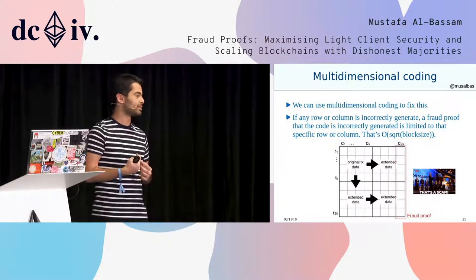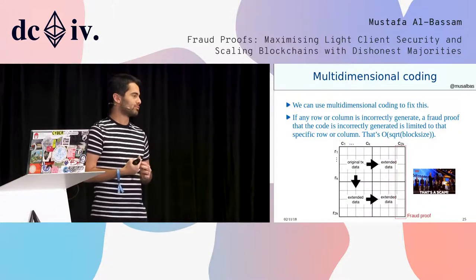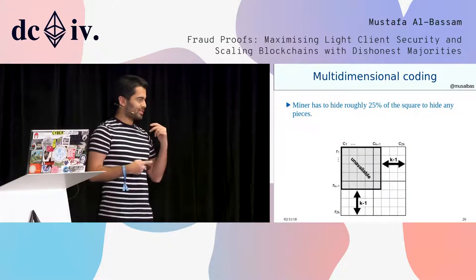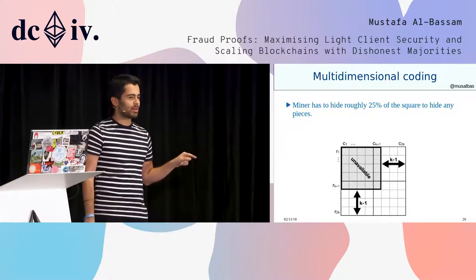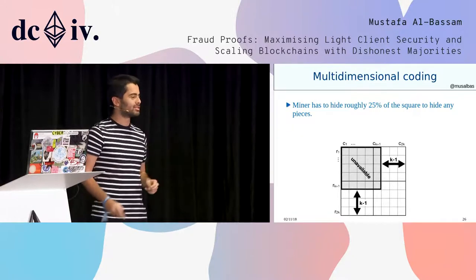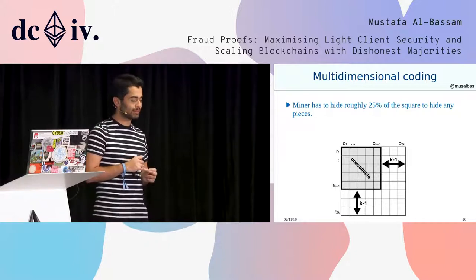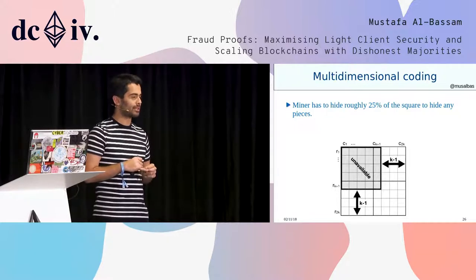This is much better because it has efficiency of O(√block size) rather than O(block size). With this 2D coding scheme — and you could use higher dimensions if you wanted, though I don't think it's worth it because there are other trade-offs — a miner would have to hide 25% of the data to hide the whole square.